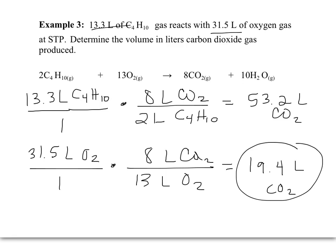So in this problem, the oxygen was the limiting reactant. We used it to predict the amount of product that should be produced. And the butane, C4H10, was our excess reactant.